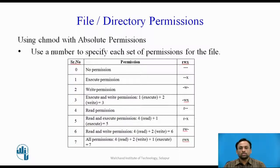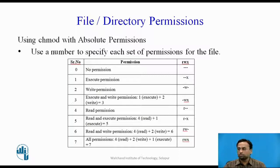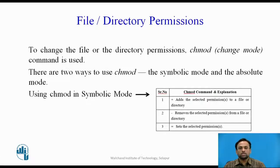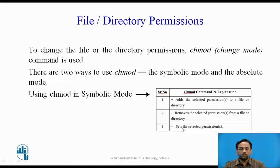To change file or directory permissions, you use the chmod (change mode) command. There are two ways: symbolic mode or absolute mode. In symbolic mode, the easiest way for beginners, you can add, delete, or specify permission sets using operators: plus sign to add a permission, minus sign to remove a permission, and equals to set a specific permission.